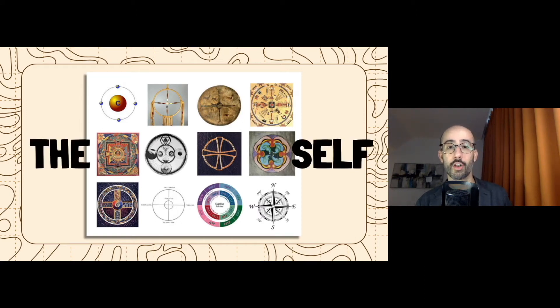This unity is called the self. The mandala, the most ubiquitous symbol of mankind, is a naturally occurring image of the self. This image appears in our psyche and in the physical world.